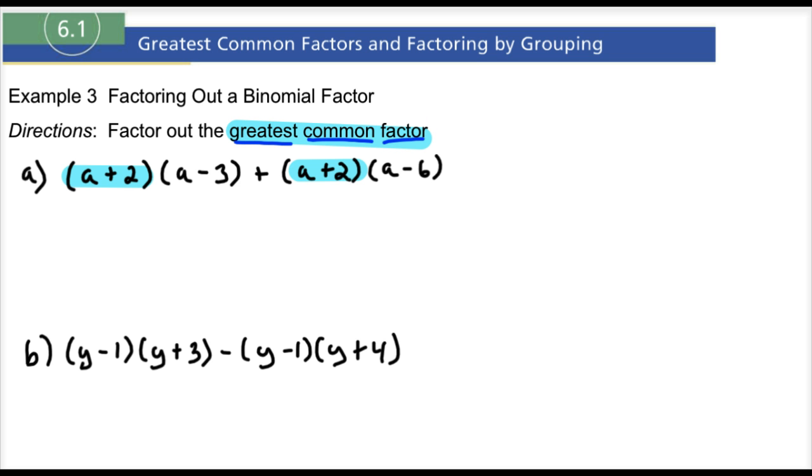So I'm going to factor out the A plus 2. So I'm going to put A plus 2. That's going to be our common factor out here. Now what goes back inside the parentheses now? So A plus 2 times what do I write right here that would give me back my original problem? Well, that would be A minus 3.